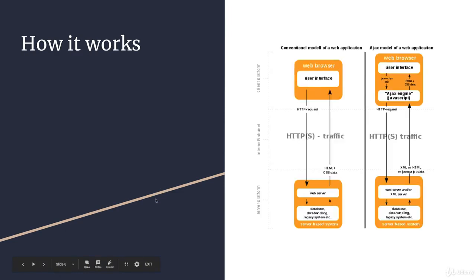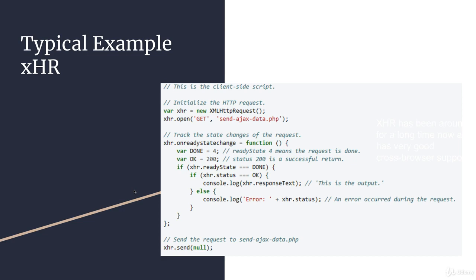Here is a model of how Ajax works. We've got the web browser — the user interface — where HTTP traffic gets sent to the server. The server does something with that and then sends it back, and then the JavaScript or Ajax engine picks it up and does whatever it's supposed to do from the programming point of view.